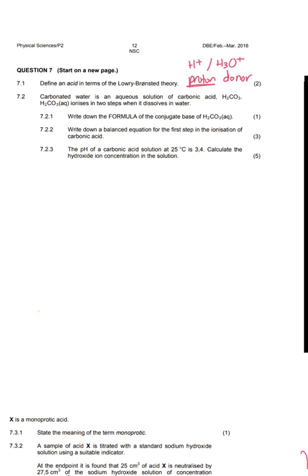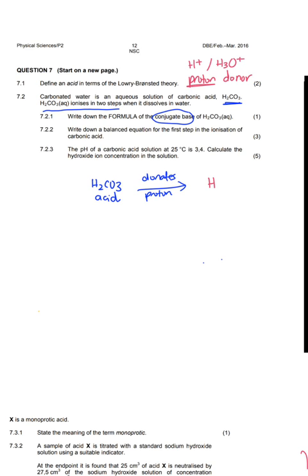Going to the next question: carbonated water is an aqueous solution of carbonic acid, H2CO3. H2CO3 ionizes in two steps when it dissolves in water. Write down the formula of the conjugate base of H2CO3. If H2CO3 has a conjugate base, that means it itself is an acid — a proton donor. After it donates its proton (the H⁺ ion), it becomes HCO3⁻. So HCO3⁻ is the conjugate base.